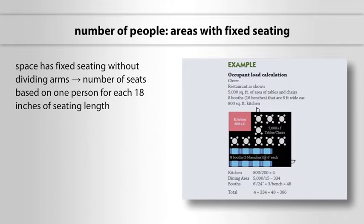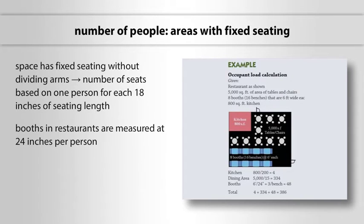When a space has fixed seating without dividing arms, such as church pews, the number of seats is based on one person for each 18 inches of seating length. Seating booths in restaurants are measured at 24 inches per person. The measurement is taken at the backrest of the seating booth.